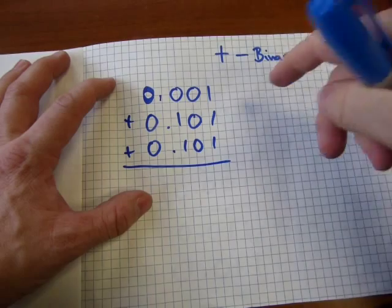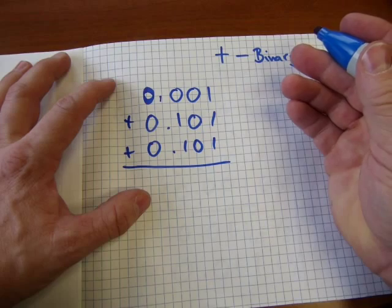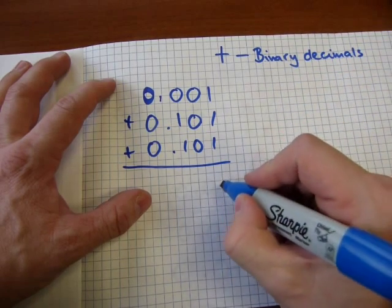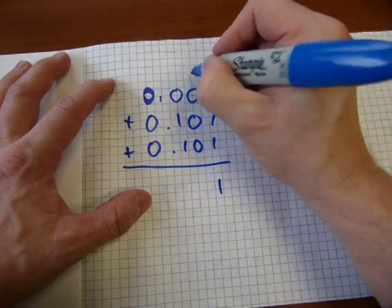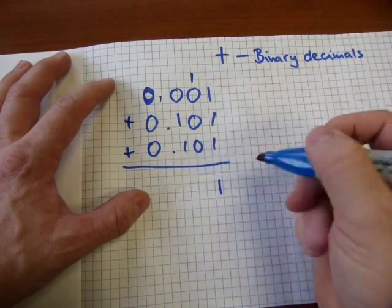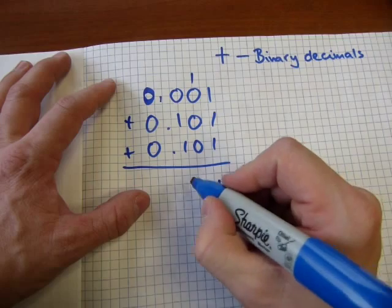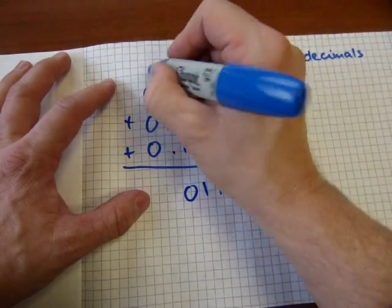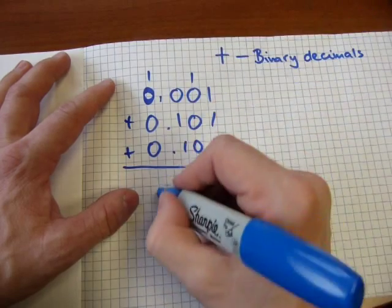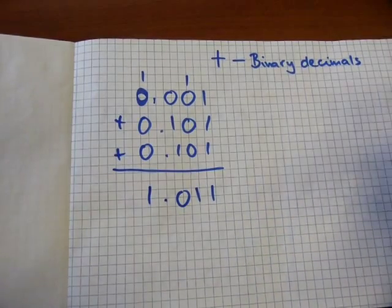One plus one plus one, that's three, but in binary you don't have digit three available. So the way you write three is one one. You write the one there, and the other one is carried over to the next place value column. One plus zeros is one, and one plus one is two, and you write two as zero one. Add the ones and those zeros as the final answer. One point zero one one is the answer.